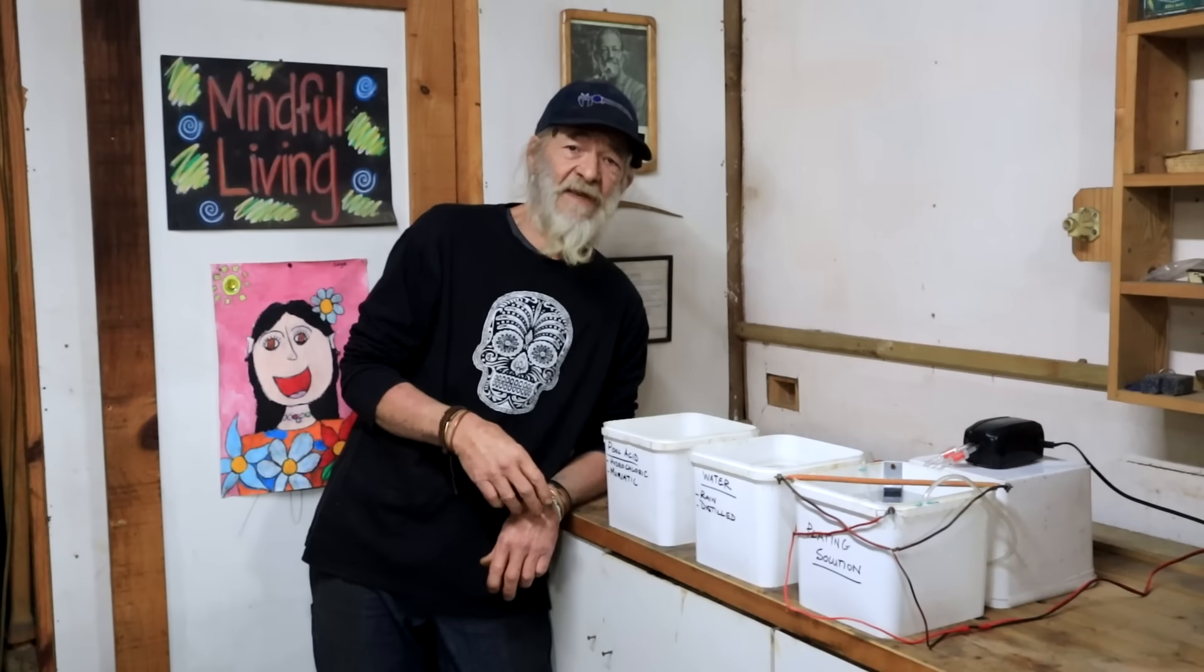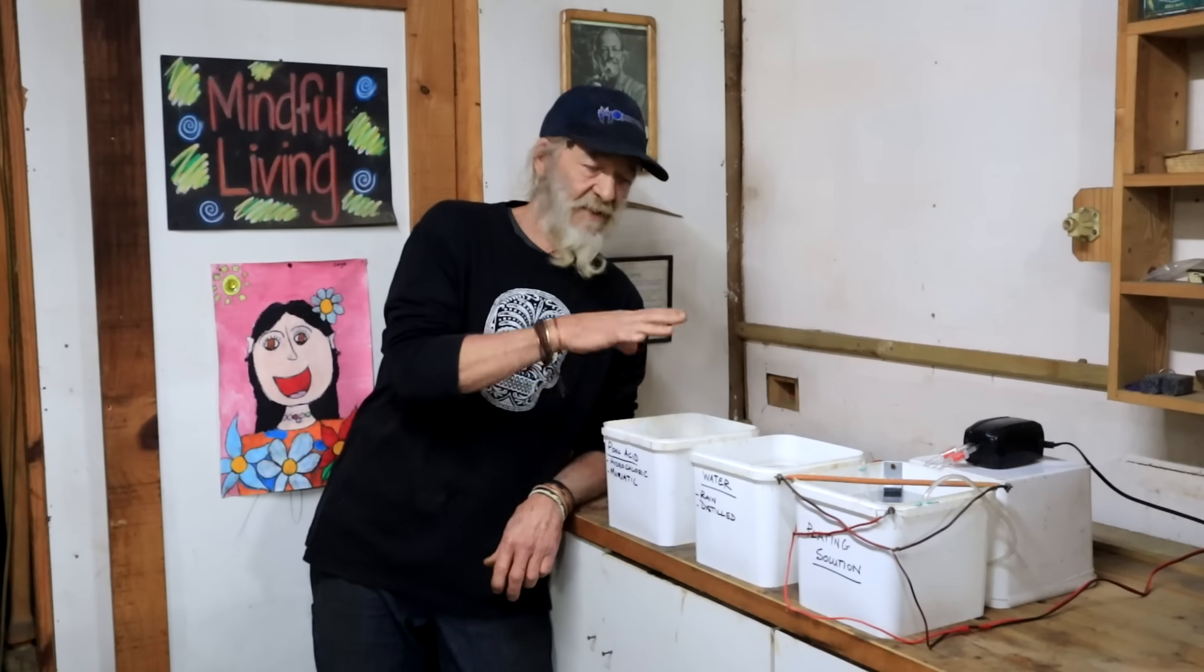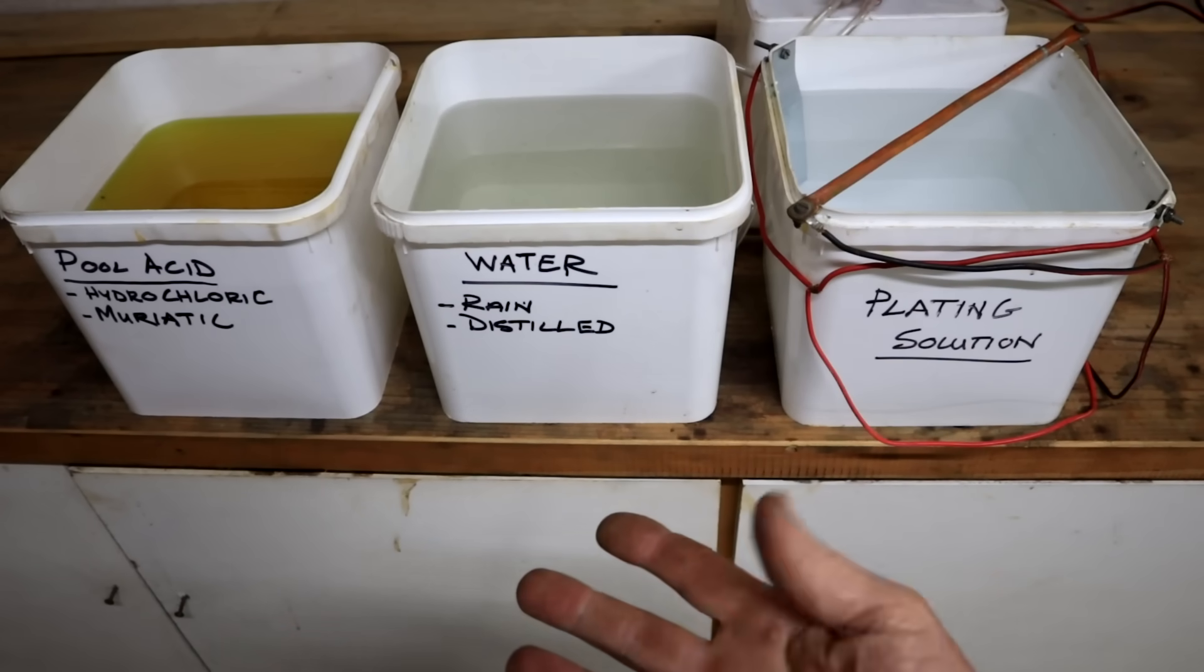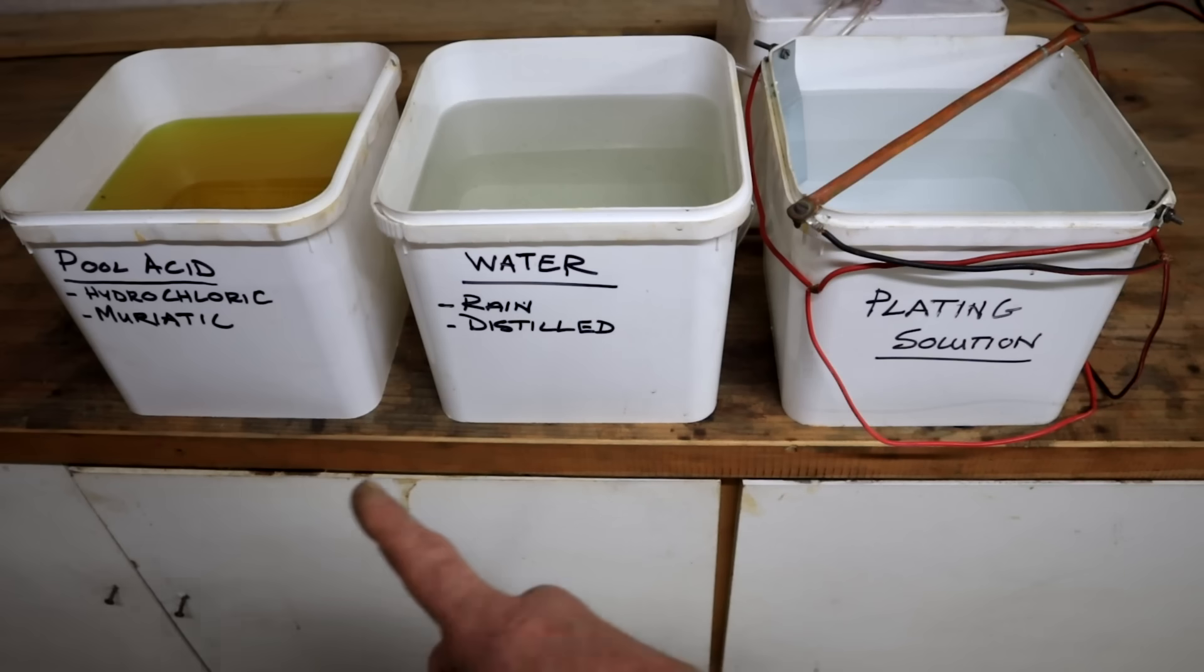Welcome to my backyard electroplating setup. I've put it together with some parts and materials you can easily find. Let's have a closer look. I have three plastic containers here. Each one can hold about five liters, roughly one gallon. The first one contains pool acid, also called hydrochloric acid. Muriatic acid is very similar, that will work as well.